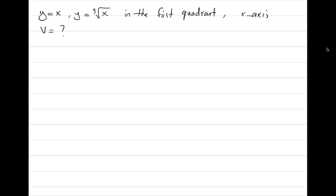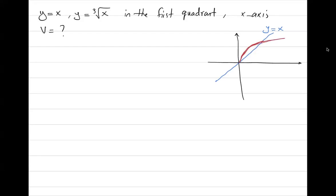Let's visualize this as usual. Here you have y equals the third root of x, and y equals x. They are intersecting. The third root of x also has a negative part when you plug in negative values, but since we're in the first quadrant, we don't continue to the other side.